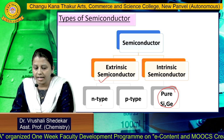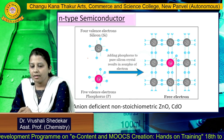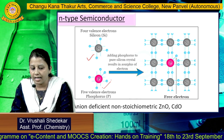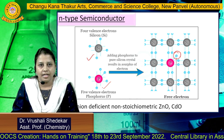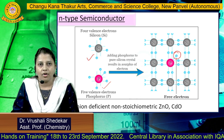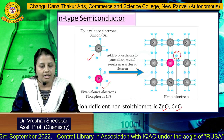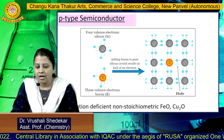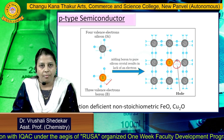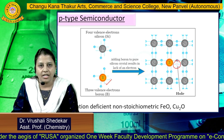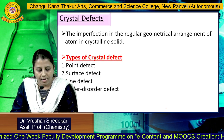Extrinsic semiconductors are divided into N-type and P-type. In N-type semiconductors, when a pentavalent atom is added to a tetravalent silicon atom, an extra electron is formed in the material. This extra electron acts as a charge carrier. Best examples are zinc oxide and cadmium oxide. In P-type semiconductors, when tetravalent silicon is doped with boron, a hole is formed in the compound material. That hole acts as a charge carrier, giving the material semiconducting properties. A best example is ferric oxide.